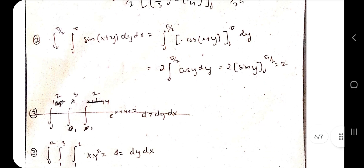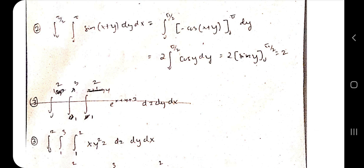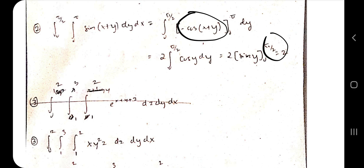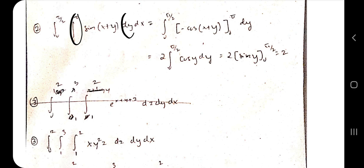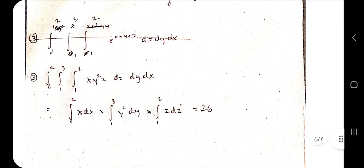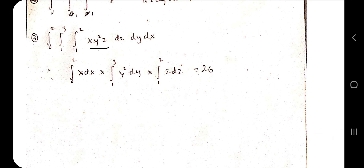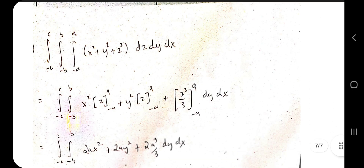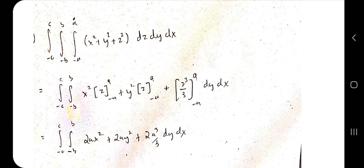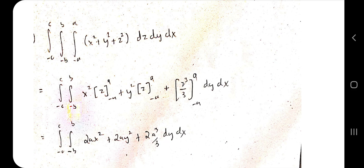If the limits are constants (x not appearing in limits), you can choose the order of dx and dy freely. Just make sure whichever differential you write first matches the limits written first. Perform the standard integration, apply the limits step by step, and get the answer. For triple integrals of multiplicative form, separate x terms, y terms, and z terms and integrate each independently over their own limits.